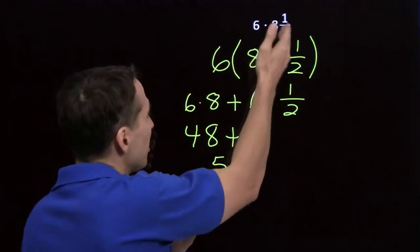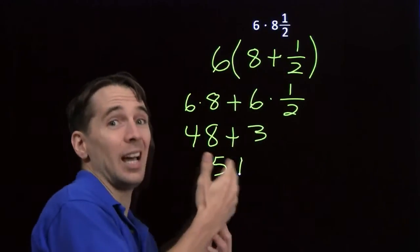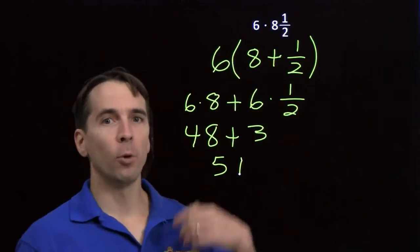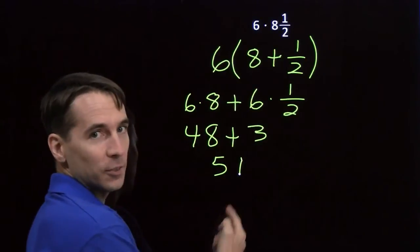That kind of makes sense, right? 6 times 8 would be 48. 6 times 9 is 54. 6 times 8½, we expect it to be right between 48 and 54. That's 51.